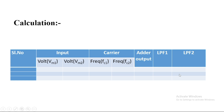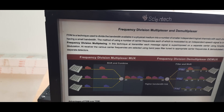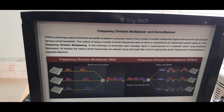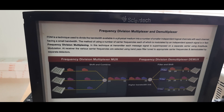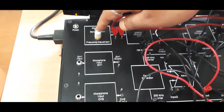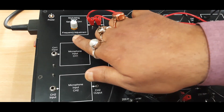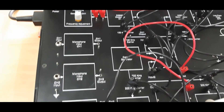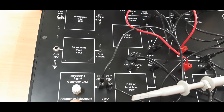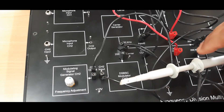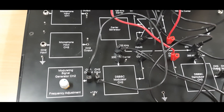Now I will show how to perform this experiment on the kit. This is your frequency division multiplexer and demultiplexer kit where we perform the experiment. You can see one modulating signal generator block with frequency adjustment, and another modulating frequency generator block. First we measure the signal amplitude and observe the changes.